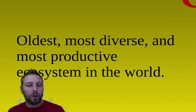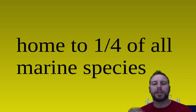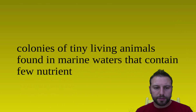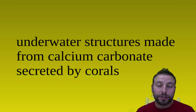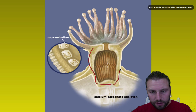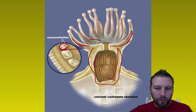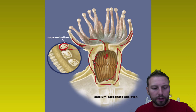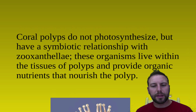Coral reefs are the oldest, most diverse, and most productive systems in the world — equivalent to our tropical rainforests. They're home to about a quarter of all marine species, so biodiversity here is huge. The corals themselves are colonies of tiny living animals found in marine waters that contain few nutrients. Underwater structures are made up of calcium carbonate created by the corals, and these provide a home for the zooxanthellae that live inside them. The coral polyp secretes a skeleton that allows the zooxanthellae to live inside, providing photosynthesis, while the coral provides structure and other necessities. Since the coral does not photosynthesize but the zooxanthellae do, we have a symbiotic relationship between the two.